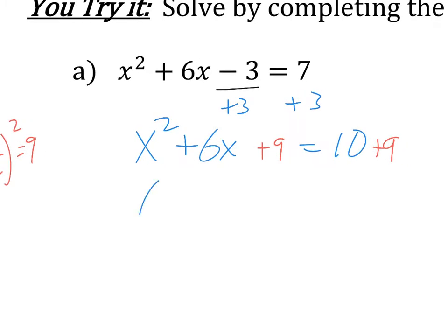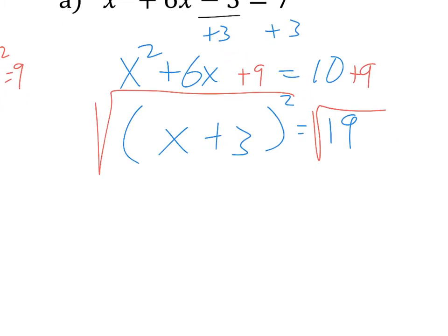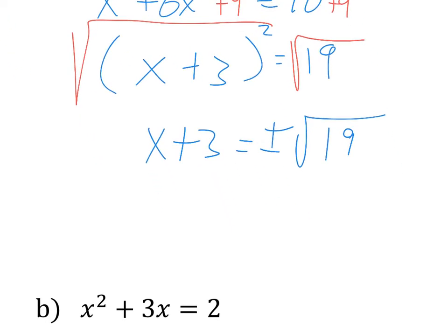Now we can factor that. This is x plus 3 squared, and this is 19. Now we're ready to get rid of that exponent, so we can square root both sides. And we get x plus 3 equals, we don't know the square root of 19 so it just is the square root of 19. But we need this to be plus or minus because remember there's two numbers there. Four point something is what the square root of 19 is worth.